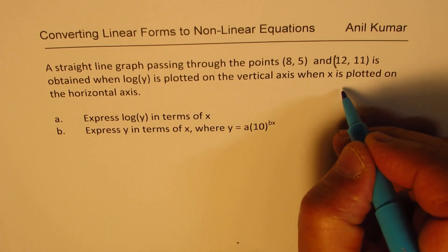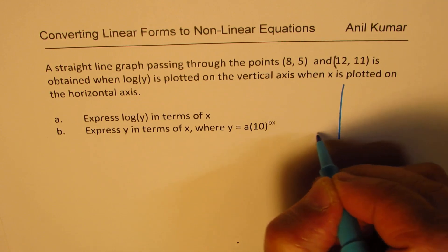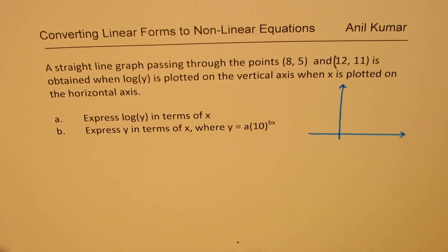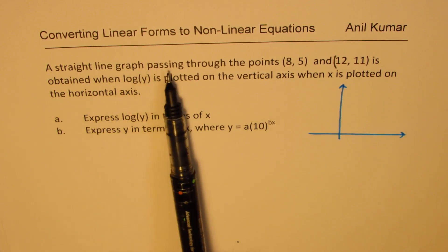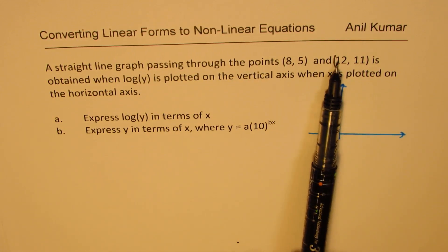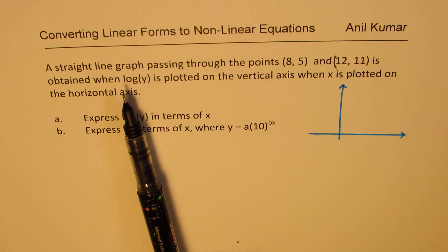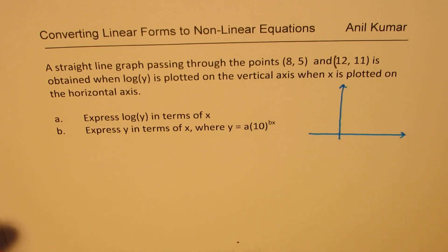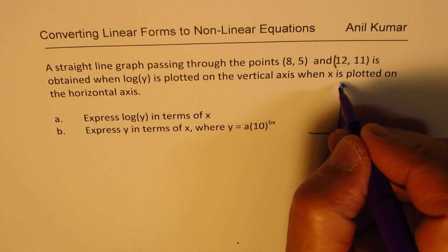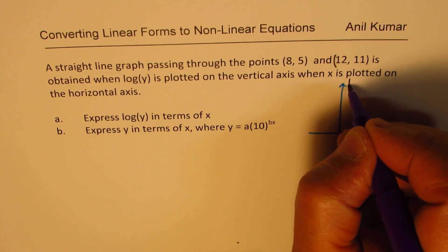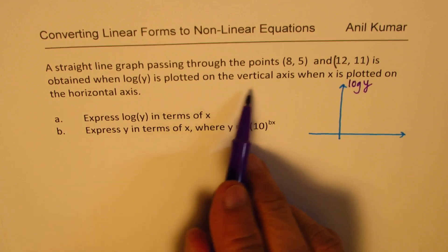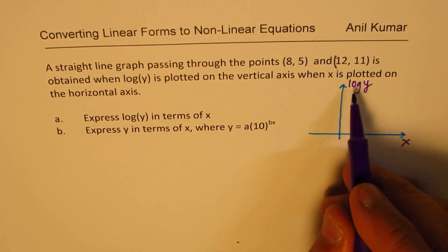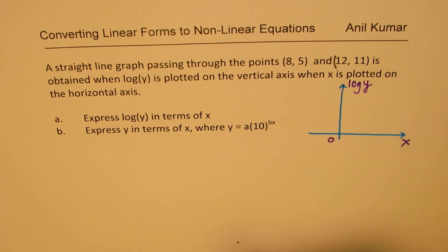Now let's try to understand the situation given here. We are saying that a straight line graph passing through these two points is obtained when log of y is plotted on the vertical axis. So on this vertical axis we have log(y), and x is plotted on the horizontal axis. Let's say this is 0.